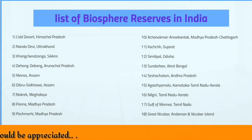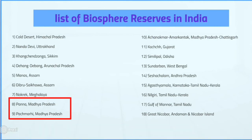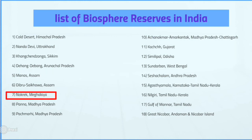For the remaining biospheres: Dehang Dibang is in Arunachal Pradesh — remember it as Eastern Himalayas. Manas is in Assam — remember it as both a century (sanctuary) and biosphere. Dibru-Saikhowa is also in Assam. Nokrek is in Meghalaya. Simlipal is in Odisha.